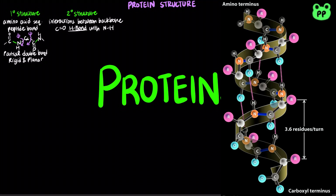There are three main types of secondary structure. In an alpha helix, the polypeptide backbone tightly wraps around an imaginary axis longitudinally through the middle of the helix, with the R groups of the amino acid residues protruding outward from the helical backbone. The structure is stabilized by a hydrogen bond between the backbone of an amino acid and the fourth amino acid on the amino terminal side of that amino acid.